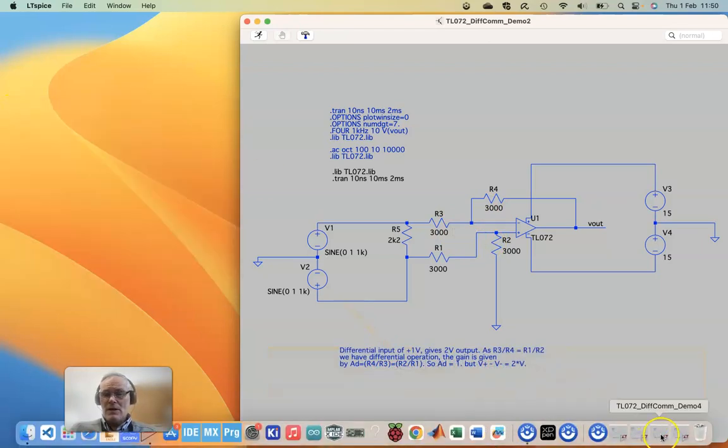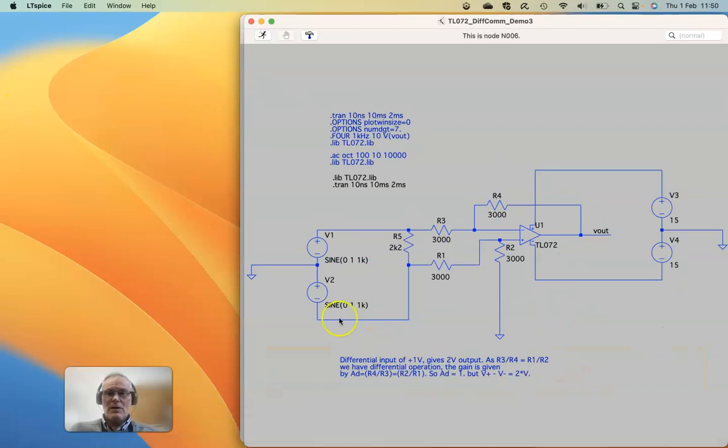So how can we fix that? Well, if we look at this here now, what I've done is I've spun one of the voltage sources around. Both voltage sources have a path to ground.